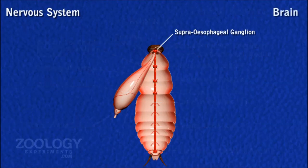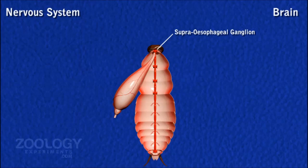The brain, or supraesophageal ganglion, is a large and bilobed mass located in the head above the oesophagus. It represents three pairs of ganglia of the head region fused together. It is divided into three parts: protocerebrum, deuterocerebrum and tritocerebrum.